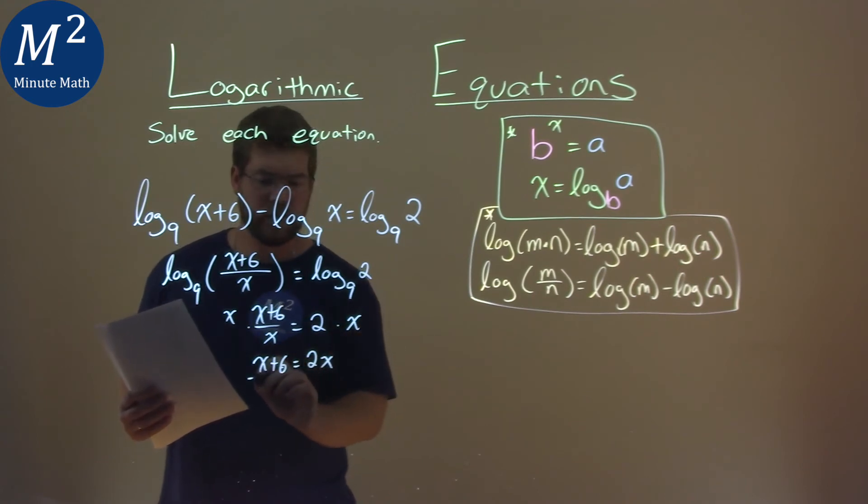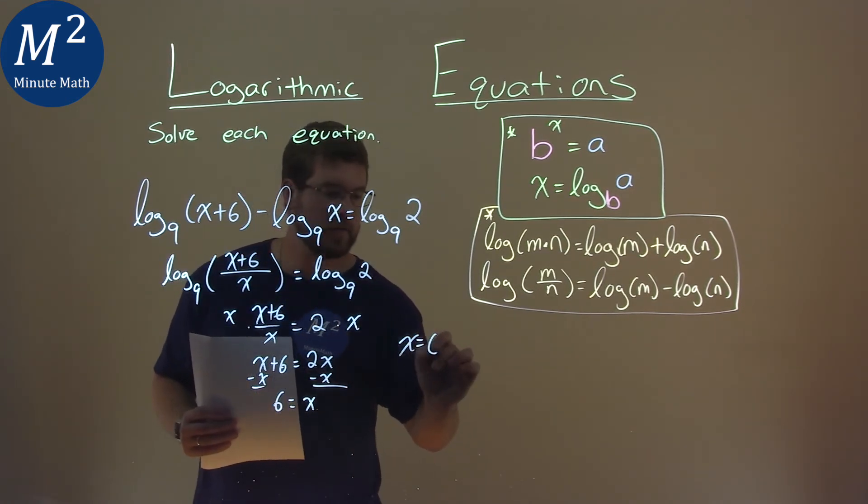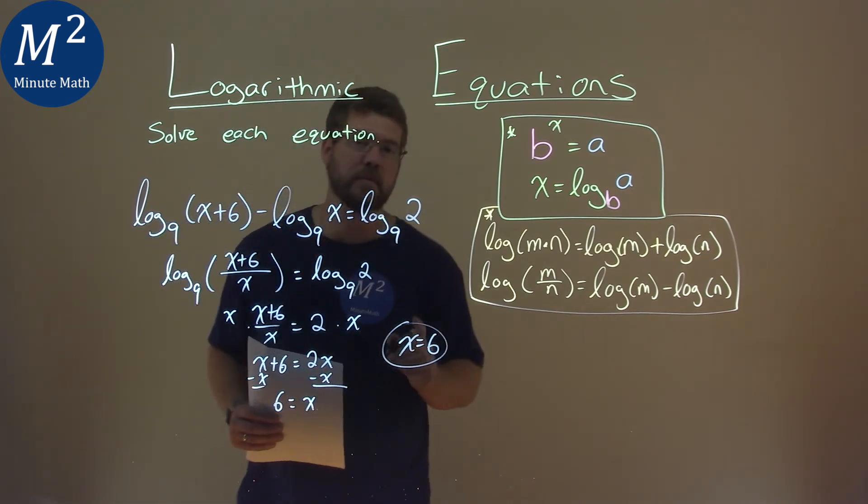Let's combine our like terms. I'm going to subtract an x to both sides, and I have a positive 6 here, and 2x minus 1x is just an x. And so my final answer here is x equals 6.